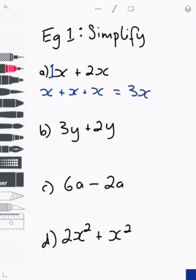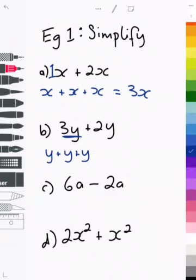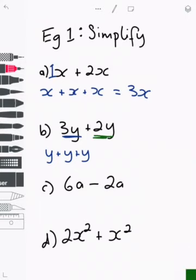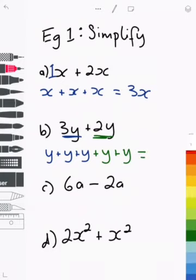The next one, 3y plus 2y. This is like me saying I have 3y's: 1, 2, 3. And then I add another 2y's. And in total, I have 1, 2, 3, 4, 5y's.